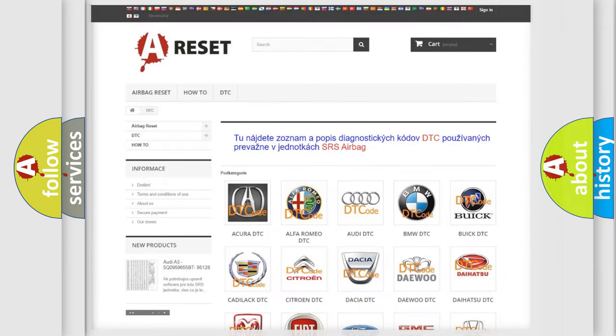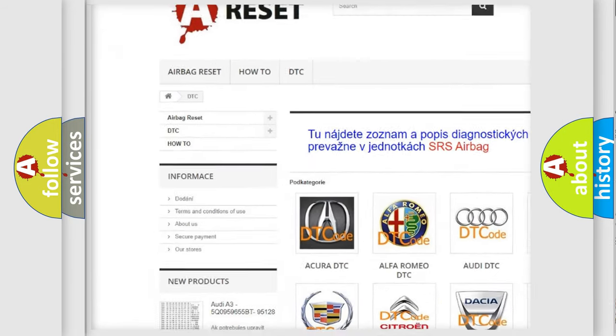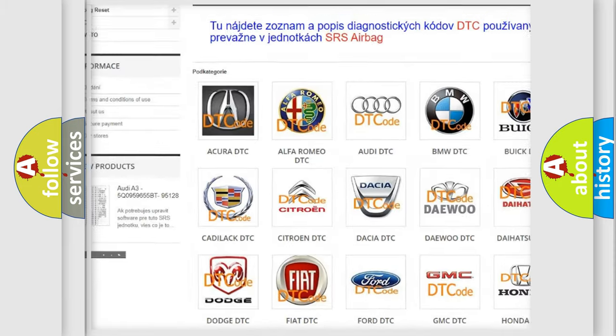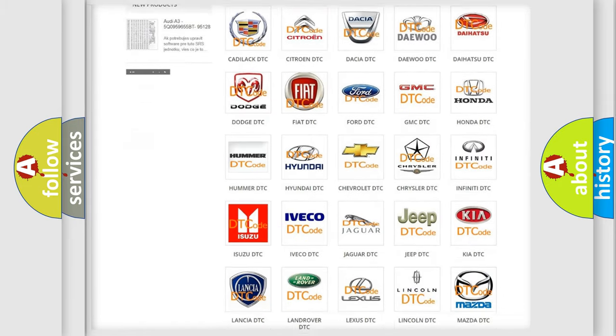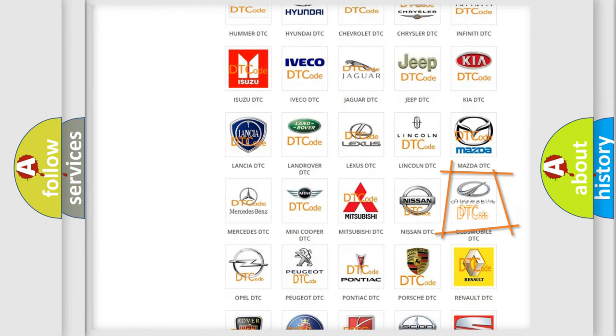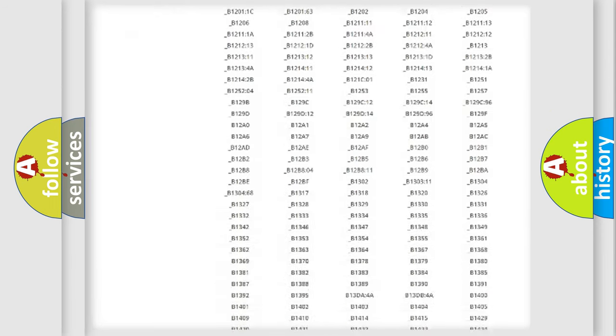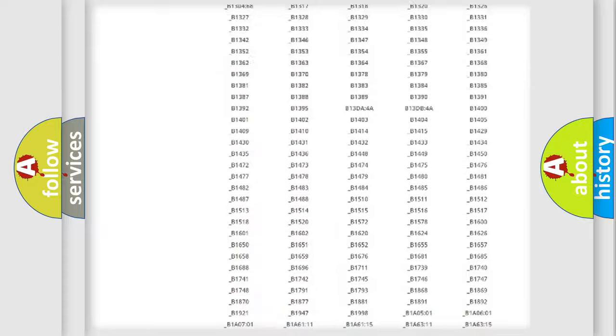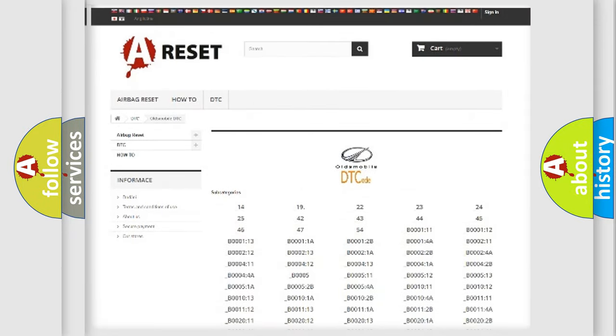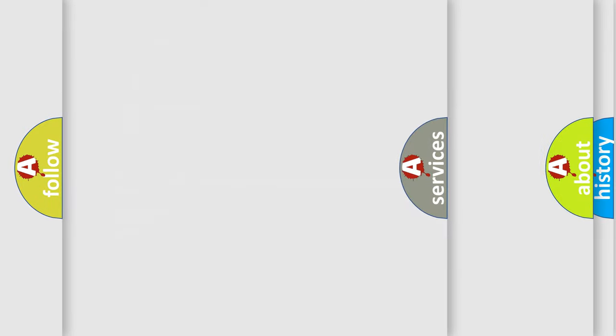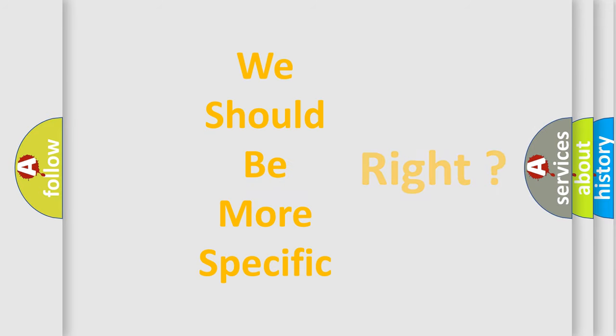Our website airbagreset.sk produces useful videos for you. You do not have to go through the OBD2 protocol anymore to know how to troubleshoot any car breakdown. You will find all the diagnostic codes that can be diagnosed in a car, Oldsmobile vehicles, and also many other useful things.